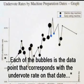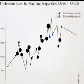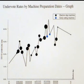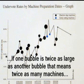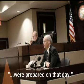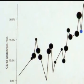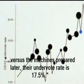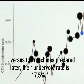Each of the bubbles is the data point that corresponds to the under-vote rate on that date. I have made the size of the bubbles proportional to the number of machines that were prepared on a given day — so if one bubble is twice as large as another bubble, that means twice as many machines were prepared on that day. What you see is that among the machines that were prepared earlier, the under-vote rate is 11.8%, versus the machines prepared later, whose under-vote rate is 17.5%.